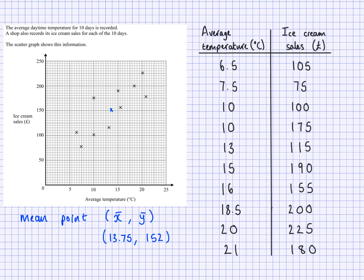Now, one of the reasons why we do this is so that we can use it to draw a line of best fit. So what I'm going to do is draw a line of best fit through this mean point and try and get equal numbers of these crosses on either side. I'm going to place my ruler about here and see if that works. If not, I'm going to adjust it. Looks like if I go through here, that'll be fine — like that. So that's my line of best fit.